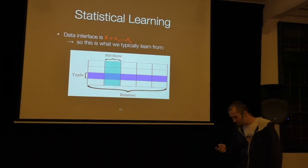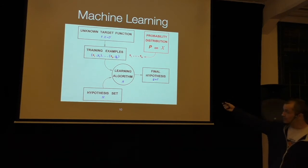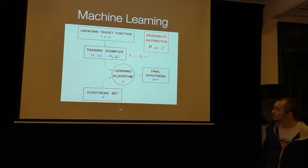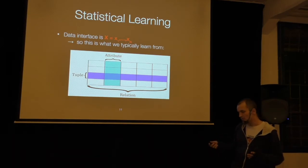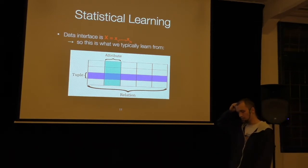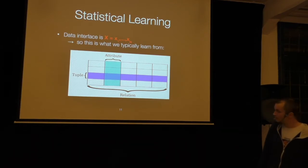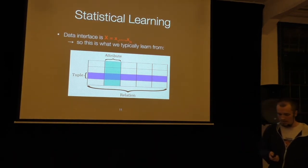I have one problem with the generality of this diagram: the representation of the data as a vector — a tuple of random variables — which turns machine learning into learning from a flat table. Every row in the table is a learning example, every column is an attribute or so-called feature. This is what you feed into Weka, RapidMiner, Scikit, TensorFlow, or whatever you like, and this is the representation upon which most of the models in the hypothesis space are designed to work with.